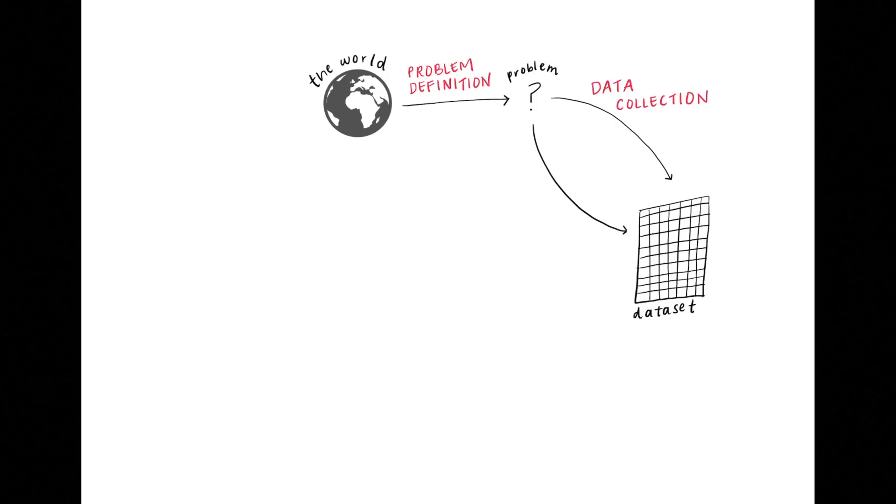In practice, problem definition and data collection might happen in a different order. For example, if you find a data set online, you might modify your problem definition based on what's feasible to do with that data. Let's say you've gone through all these steps or have found an existing data set and labels to use.